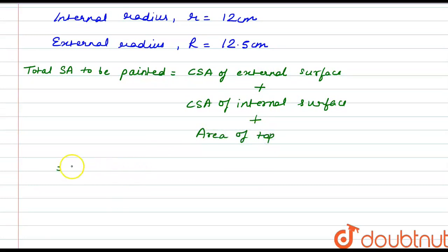As we know that the CSA of a hemisphere is 2πr², so for the external surface, it would be 2πR², plus for the inner surface, it would be 2πr². And for the top,